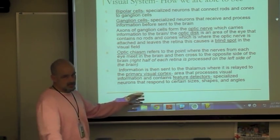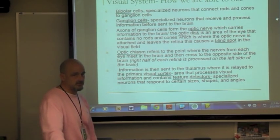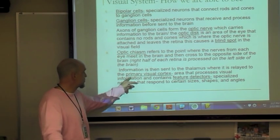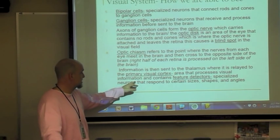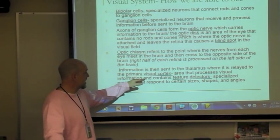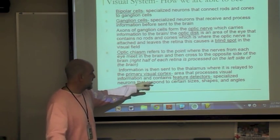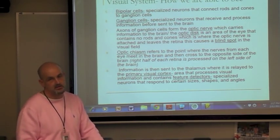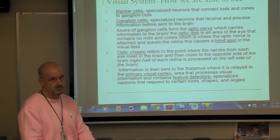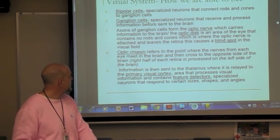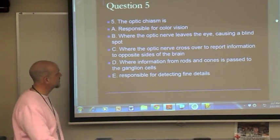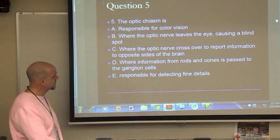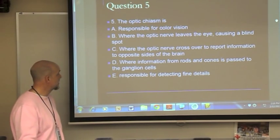Information is sent to the thalamus — the relay center — then relayed to the primary visual cortex, which processes visual information and is located in the occipital lobe. Feature detectors are specialized neurons that respond to certain sizes, shapes, and angles within the primary visual cortex, essentially putting together pieces of the puzzle. The optic chiasm refers to where the optic nerve crosses over — chiasm means X — so the answer to that question is C.